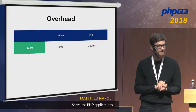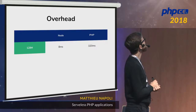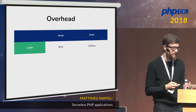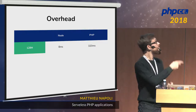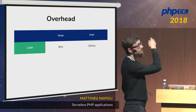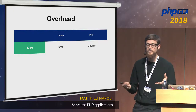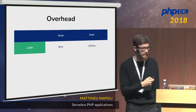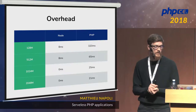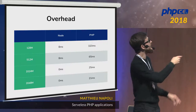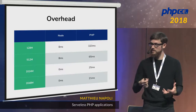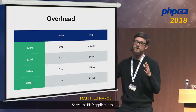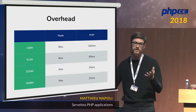This is what we get: 300 milliseconds of runtime for PHP — not great. The good news is we can customize the amount of memory available for the Lambda. The more RAM we have, the more powerful the CPU is. When we increase the Lambda memory, we get decent performances — between 20 and 25 milliseconds of overhead. So if you have an HTTP request that takes 100 milliseconds, with Amazon Lambda it will take 120 milliseconds.